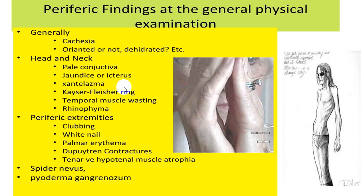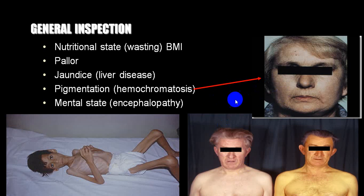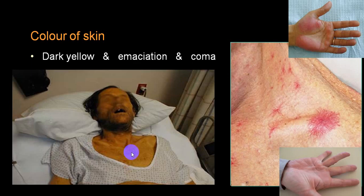The KF ring is classically seen in Wilson's disease — it is a golden-yellow ring. This is a typical prayer sign — a deformity which is very classical. You can see pigmentation secondary to hemochromatosis. This is severe cachexia. You can see jaundice — there is little yellowish discoloration. A person is emaciated — cachexia is there, there is jaundice, spider nevi, Dupuytren's contractures, and palmar erythema. Some of these findings give you a very good idea — all three findings together suggest chronic liver disease, particularly cirrhosis of liver.